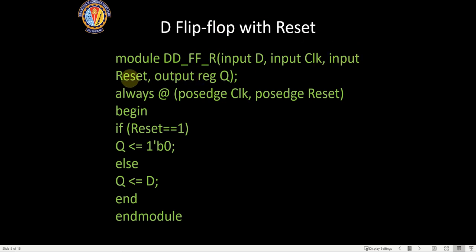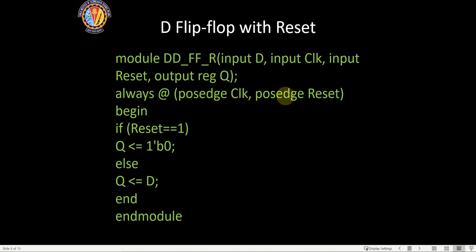Many D flip-flops require a reset pin so we can set the initial value to 0. The output Q is a register, reset is a normal input, and Q changes with respect to the positive edge of the clock or the positive edge of reset. The always block checks for both conditions: if anything happens — either positive edge of clock or positive edge of reset — the output will change.